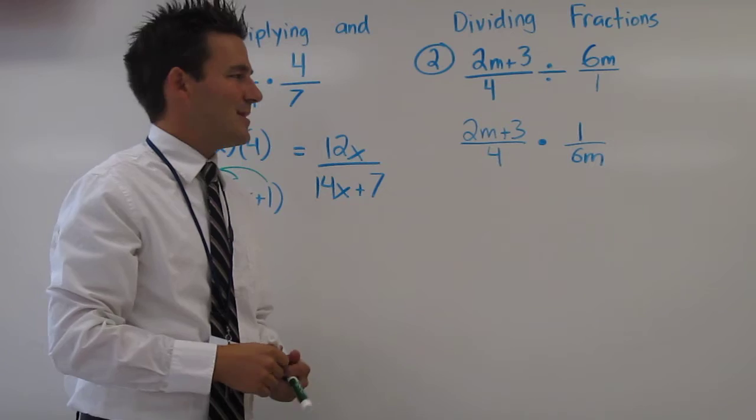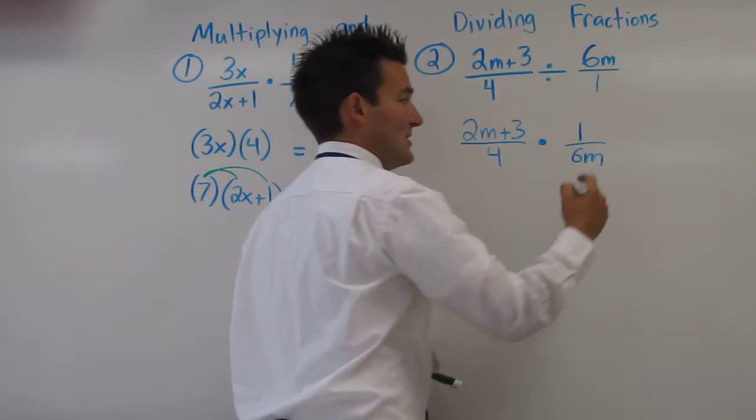That is, multiplying. 1 times 2m plus 3 is 2m plus 3.